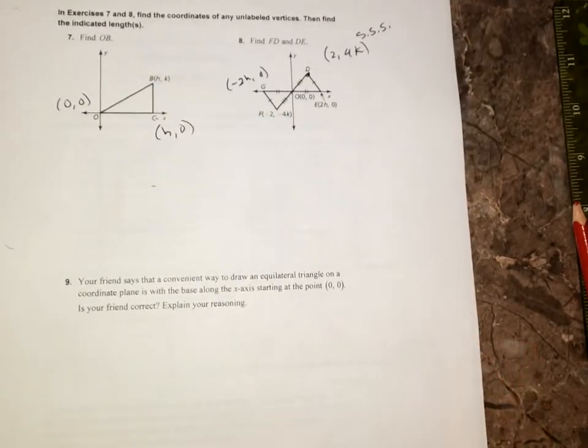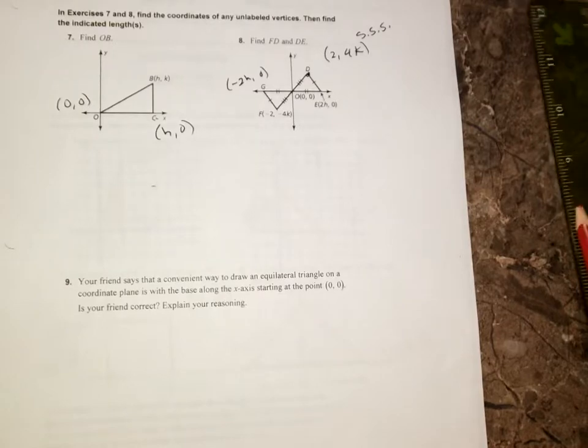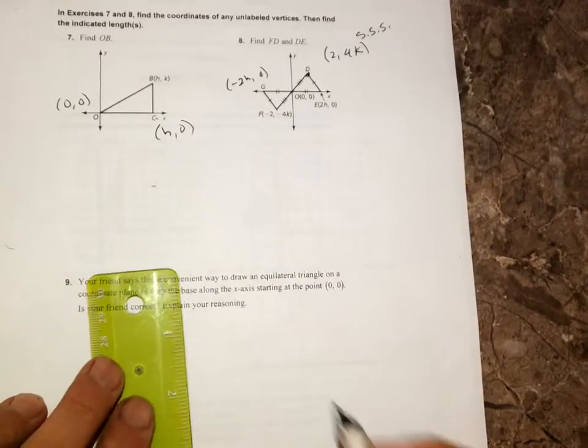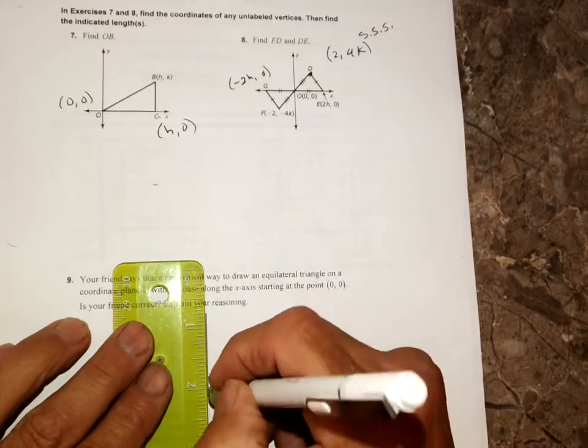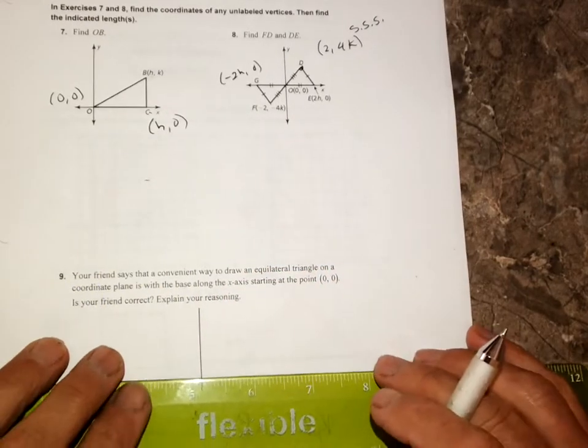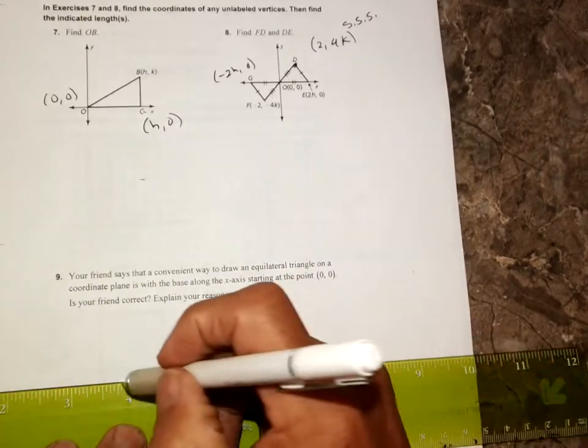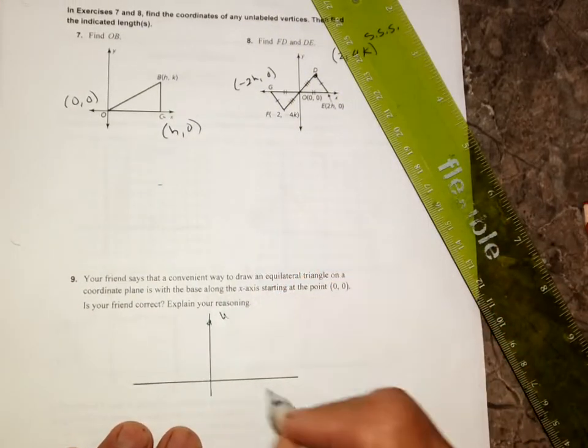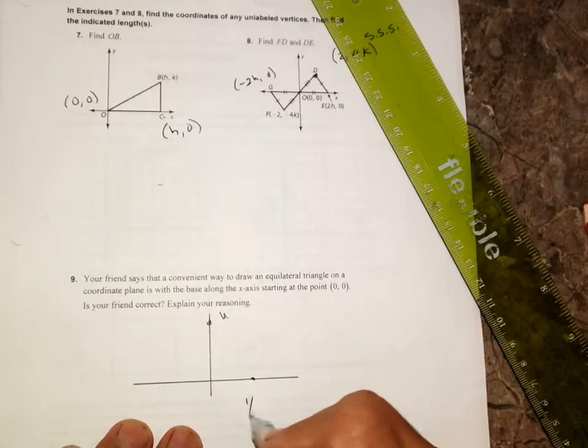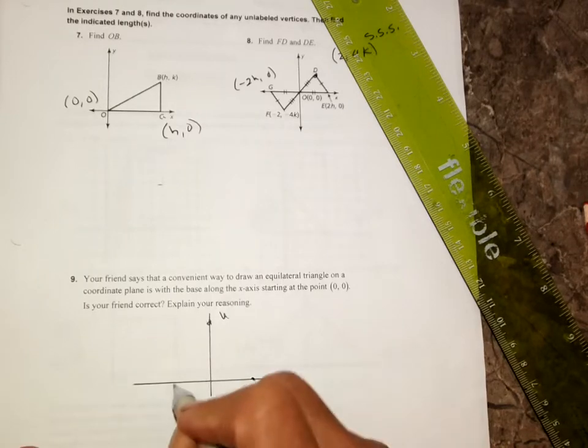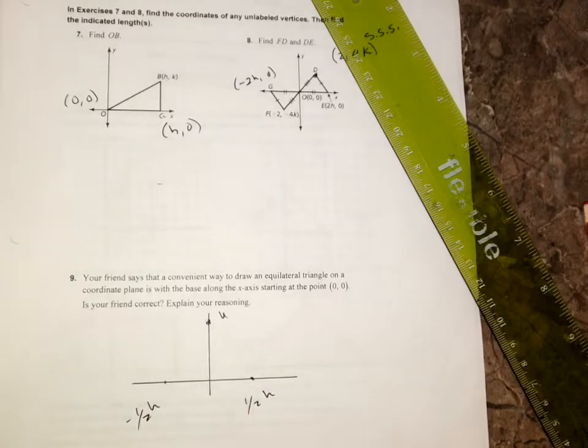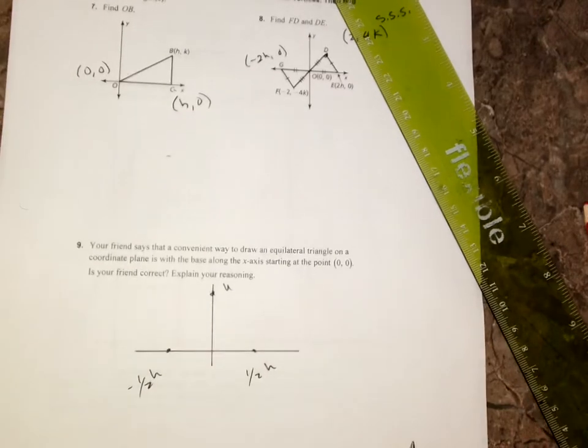Last but not least, your friend says that the convenient way to draw an equilateral triangle in a coordinate plane is to start with base along the x-axis and start at zero, zero. You know, it'll work. I think it's easier to put the height at zero, zero. That's what I think. H is here. I call that one-half H. I call that a negative one-half H. And I think it's easier to put right there.